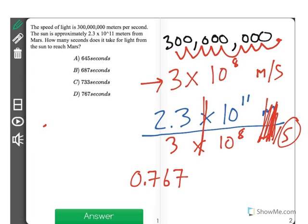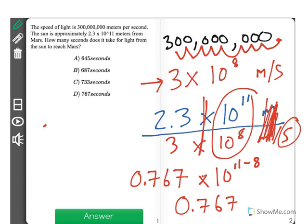Next, what I need to do is figure out the difference between—it looks like I have 10 to the 11th. And if you remember, when we have a fraction like this, we subtract the bottom exponent from the numerator's exponent. So, we have 0.767 times 10 to the 3rd.